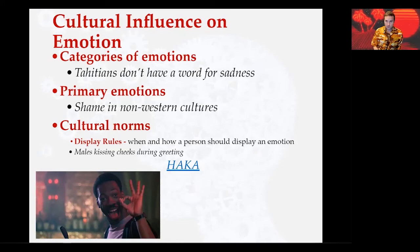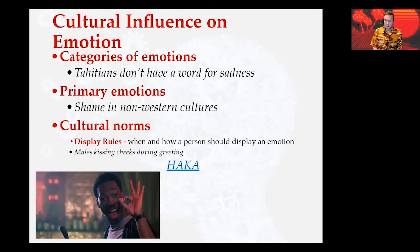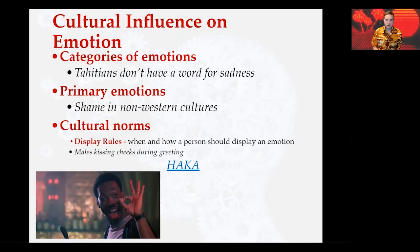Culture also influences our norms about how we display emotion. Display rules are when and how a person should display an emotion. For example, males kissing each other on the cheeks during a greeting is not so common in Western cultures, especially in the United States, but it is common in European and Eastern cultures. A great example of this is the New Zealand warrior dance known as the Haka, which we're going to watch now.